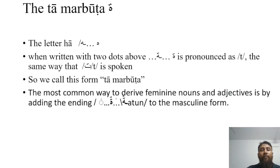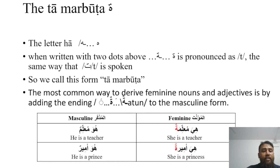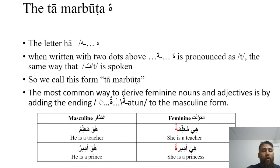The most common way to derive feminine nouns and adjectives is by adding the ending -atun to the masculine form. Here are some examples of masculine and feminine forms. The first one: in English, 'he is a teacher' — in Arabic, hua mualimun; and the feminine, 'she is a teacher' — hiya mualimatun. The second example: hua amirun, 'he is a prince'; and the feminine form, hiya amiratun, 'she is a princess.'